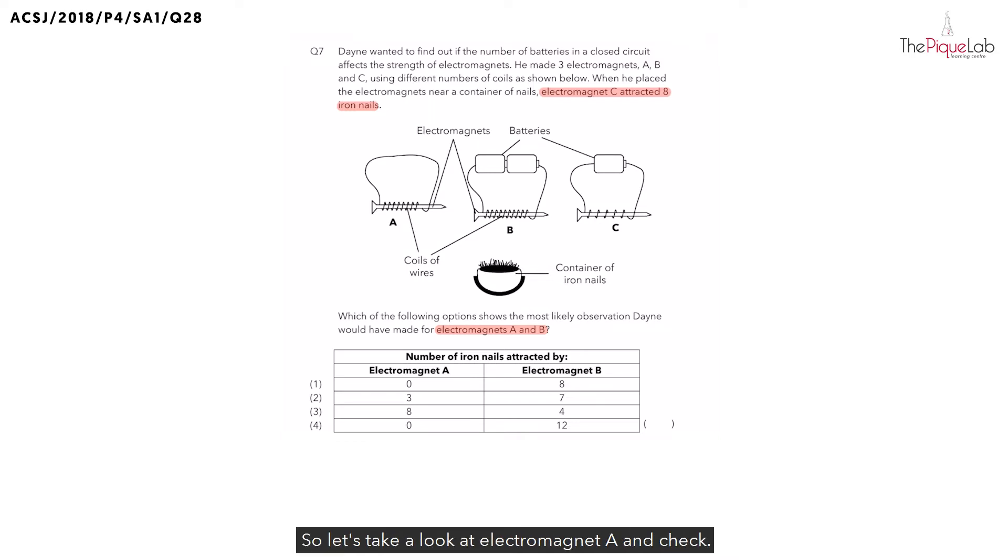Let's take a look at electromagnet A and check, are there any batteries here? No. So we can write down there are actually no batteries. And since there are no batteries, can this setup produce electricity? No. Which means, would the nail in setup A be able to become an electromagnet?